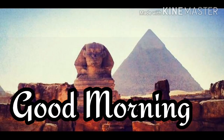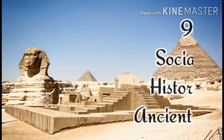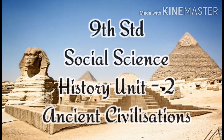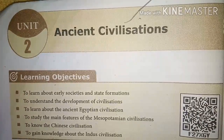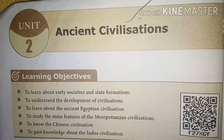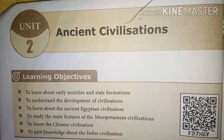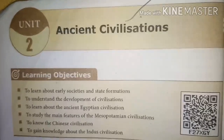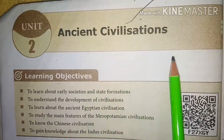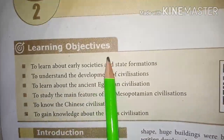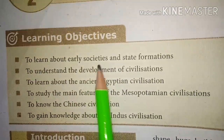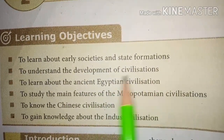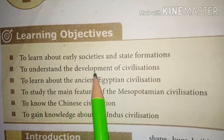Good morning students. 9th Standard Social Science, History Unit 2: Ancient Civilizations. Previous lesson we have studied about the prehistoric period. Now Unit 2: Ancient Civilizations. Learning Objectives: To learn about early societies and state formations, and to understand the development of civilizations.